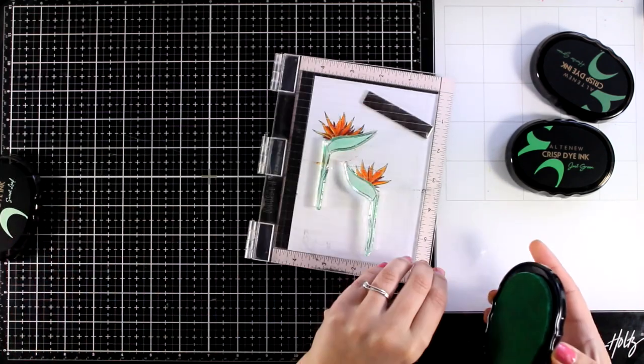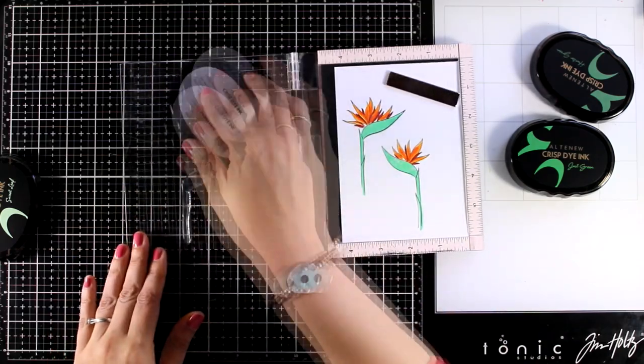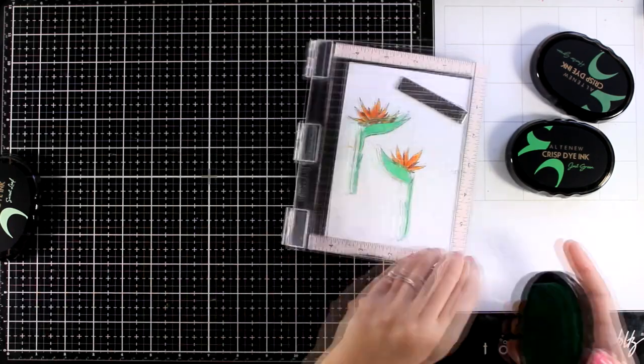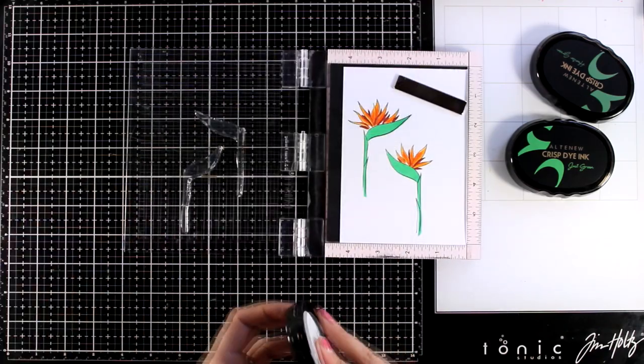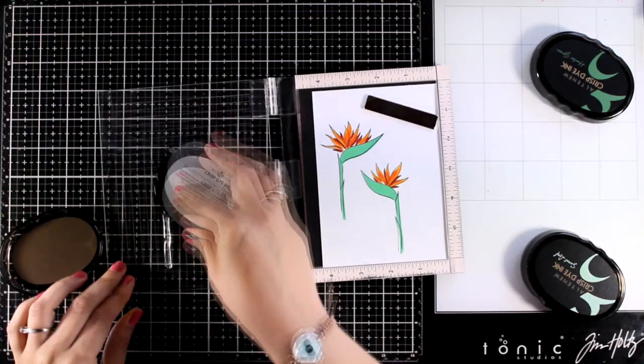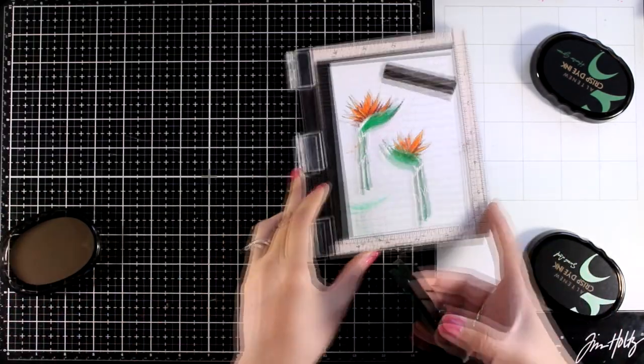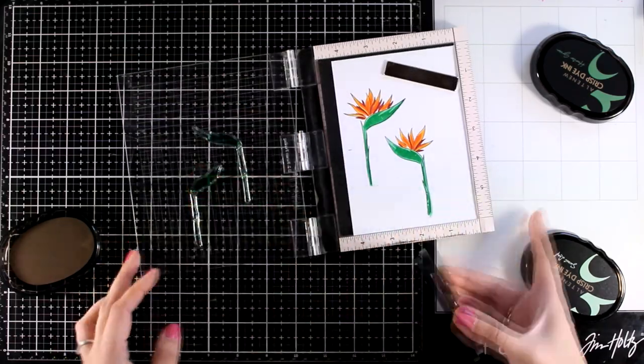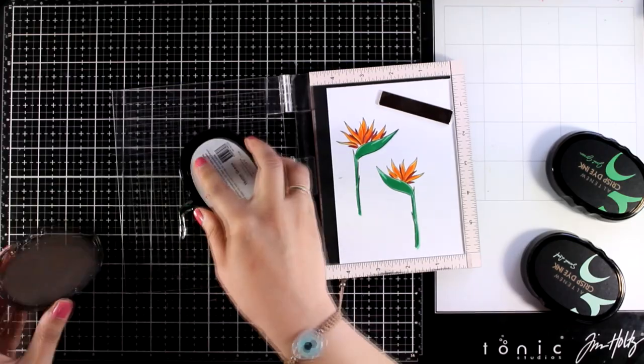For the leaves there are three layers. I went with Sweet Leaf. And notice that nothing is perfect on the right flower, nothing is perfectly aligned. I'm going to show it to you here. But there is always another layer to cover up any mistakes. Now this is the second layer and I went with Just Green. And then finally for the last layer I went with Hunter Green.